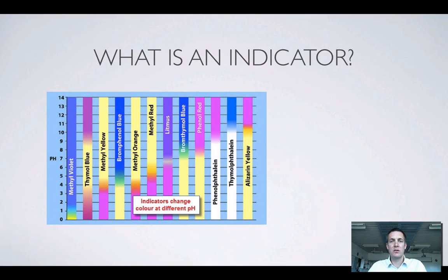So first of all let's look at what an indicator is. An indicator is a substance that will change color depending on the pH of a solution that it's in.